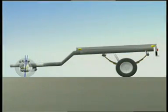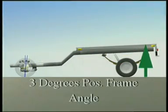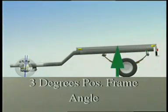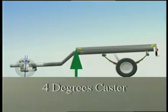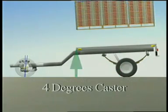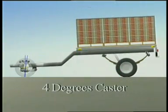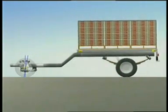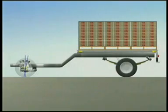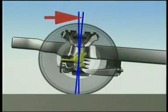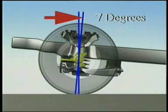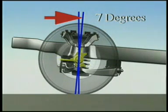For instance, if an empty vehicle has 3 degrees positive frame angle and 4 degrees caster, when the frame angle moves to zero, caster may shift to 7 degrees. This might create problems on the road.